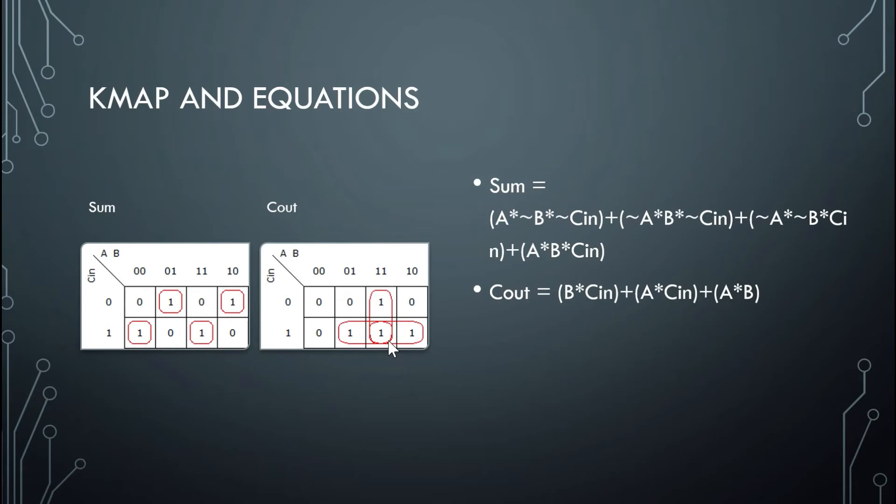Cout, we have three combinations here. And the first one is B and Cin. So it's got to be this circle, because B is high here and here, and Cin is high down here. So this is this circle. Or together with A and Cin. So it's this circle, because A is high right here and here, and Cin is high here and here. So that's this equation. And then A anded with B is this one, because you have A is high, B is high, and the Cins cancel.